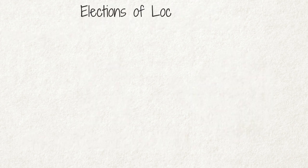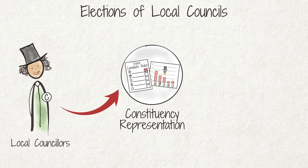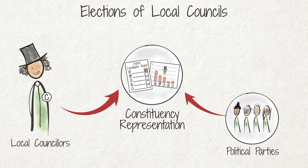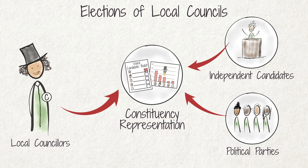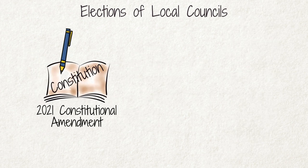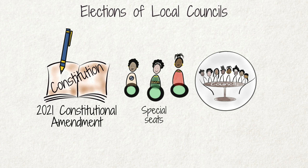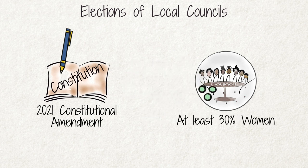Local councillors are elected using the constituency representation system. In local elections, we vote for our preferred candidate, who may be aligned to a political party, but may also be an independent candidate. The candidate with the highest number of votes wins the ward election. A constitutional amendment in 2021 enabled the addition of special seats designated for the election of women under the PR system. The number of special seats must be at least 30% of the total number of ward councillors in that council, to be determined by an Act of Parliament.